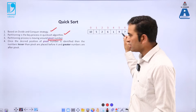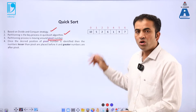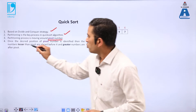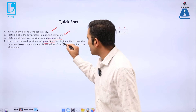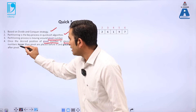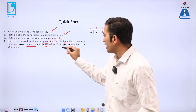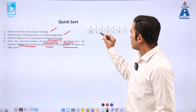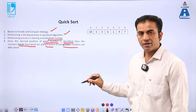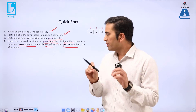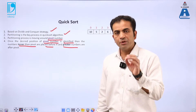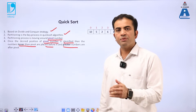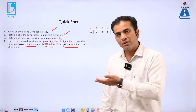The pivot number can be any number — the first element, the last element, the middle of the array, or any number; it is your choice. Once the desired position of the pivot number is identified, the numbers lesser than the pivot point are placed before it and the greater numbers are placed after the pivot point.